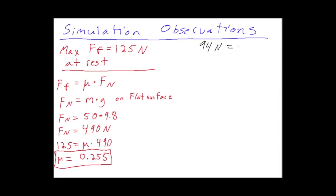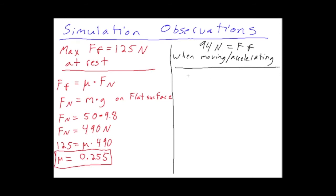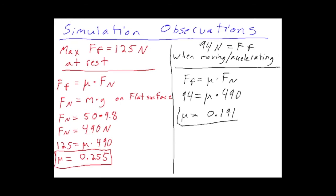The other force friction was 94 N — the force of friction when the box was moving and accelerating. Repeating the same steps: force friction equals mu times force normal. Plugging in 94 for force friction and 490 for force normal — because the mass and gravitational pull did not change — we find the coefficient of friction equals 0.191.